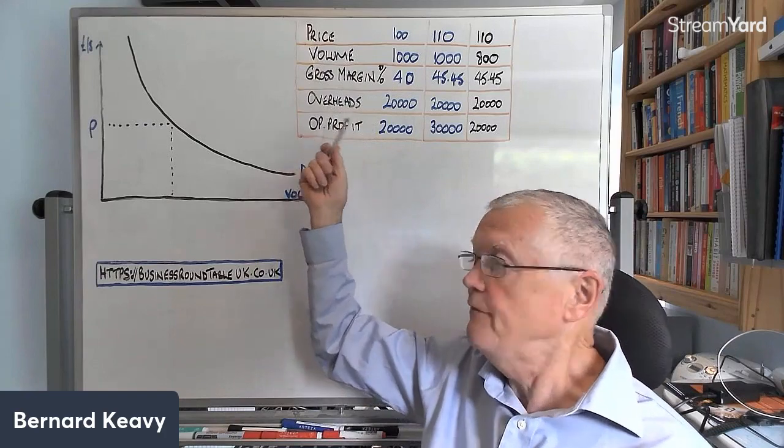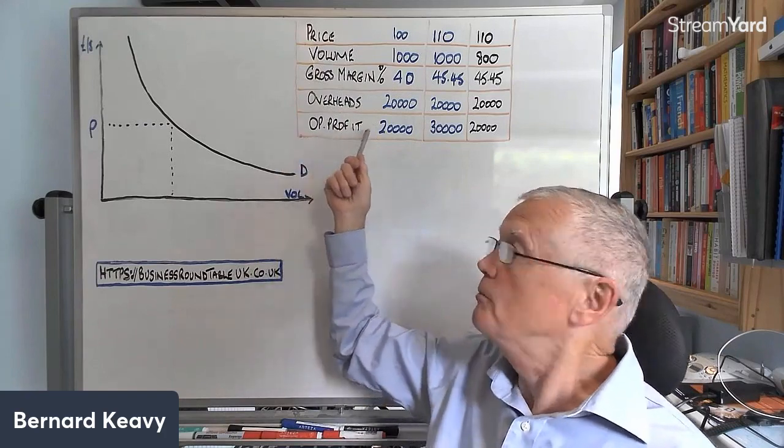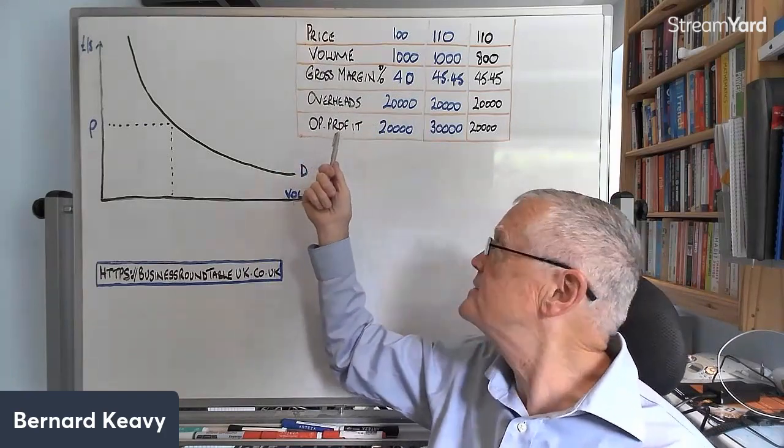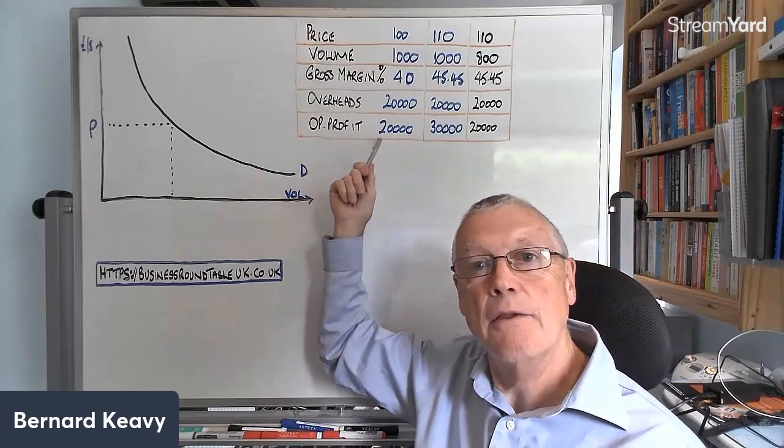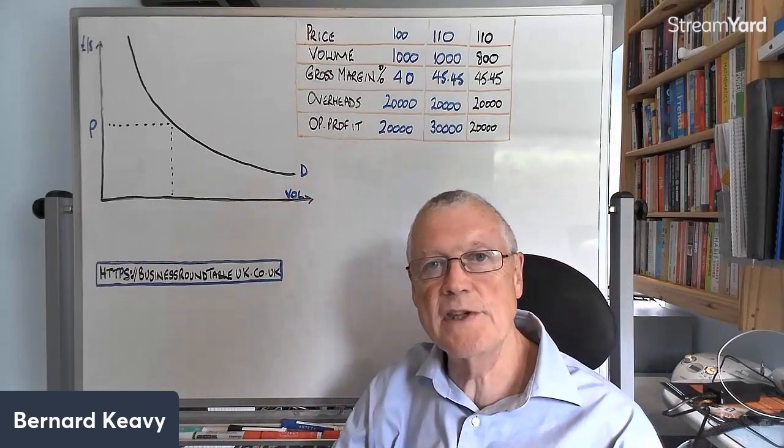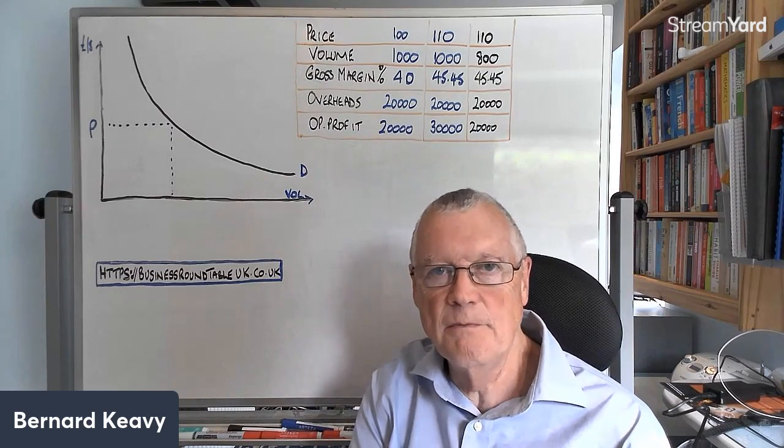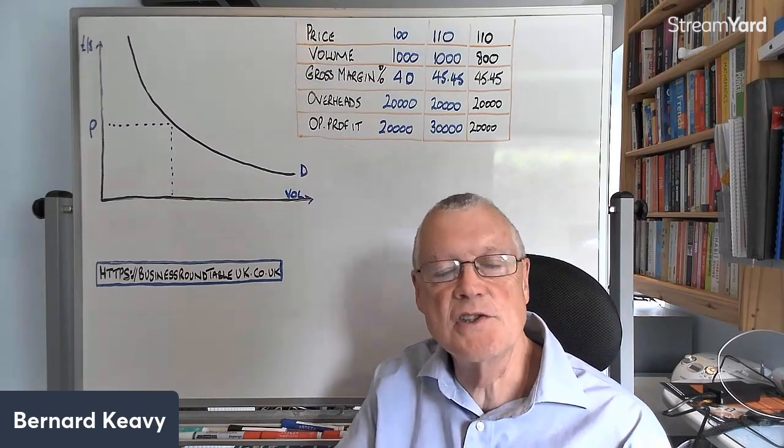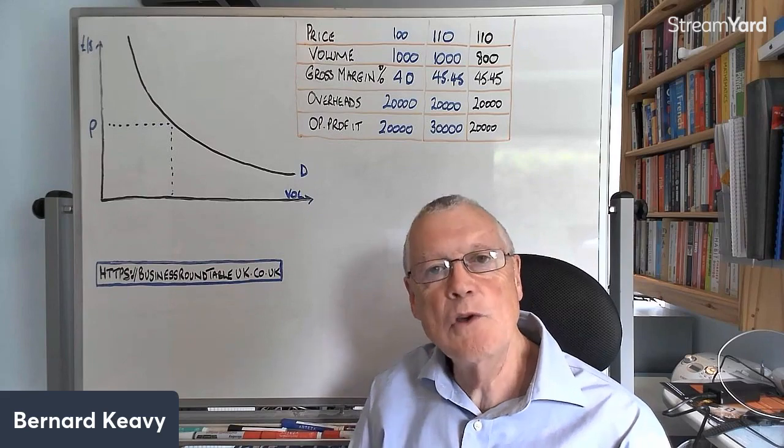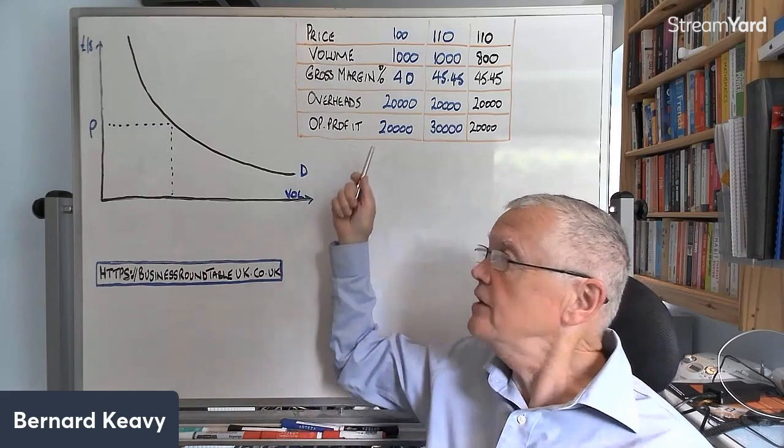And you'll still have the same overheads. If you actually work the numbers through, your bottom line, your operating profit, instead of being 20,000 would be 30,000. So it's gone up 50%. So just charging 10% more on average by implementing various strategies to enable you to do that without losing any customers could increase your operating profit by 50%.